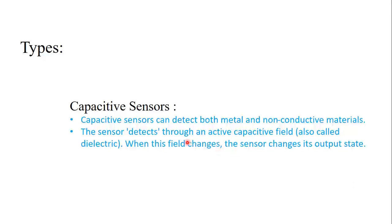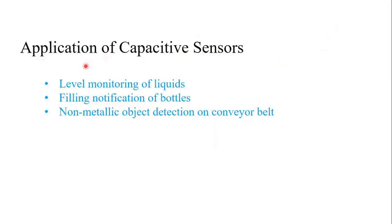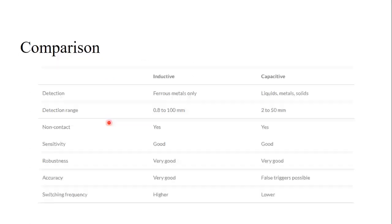The capacitive sensor changes its output based on those detected changes. This is the capacitive proximity sensor. Some applications: capacitive sensors are normally used in level monitoring of liquids, in water filling industries, and for non-metallic object detection on conveyors. If you want to detect metallic objects on a conveyor, you can use an inductive sensor instead.